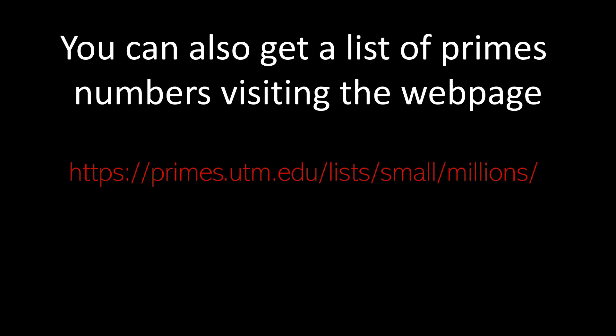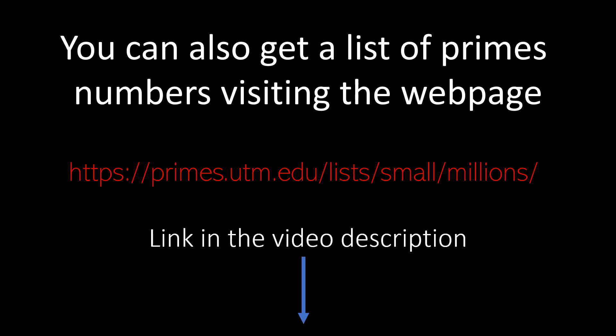Not only can you do that in the PARI/GP calculator, you can also get a list of prime numbers by visiting a website — I'm going to put that link in the video description. This website has a list of several sub-lists of prime numbers. For example, if you want the first million prime numbers, or ten million and so on, you can download those as text files and look at those lists.